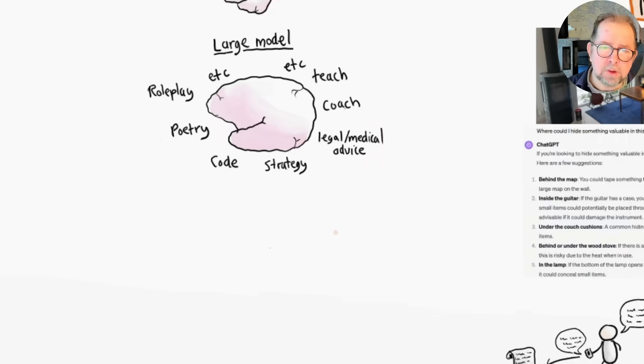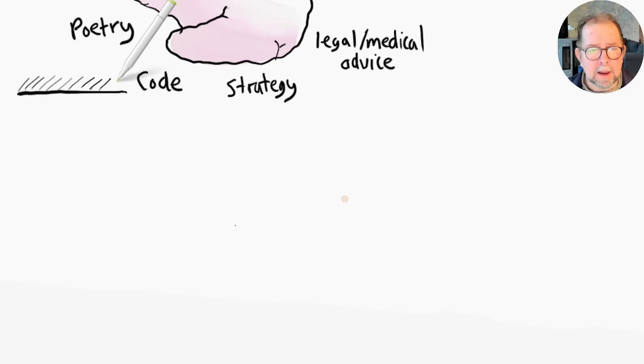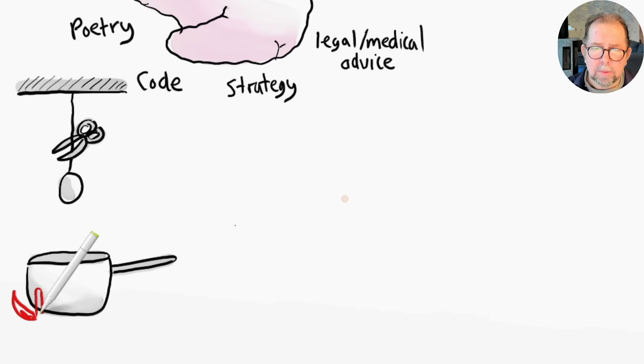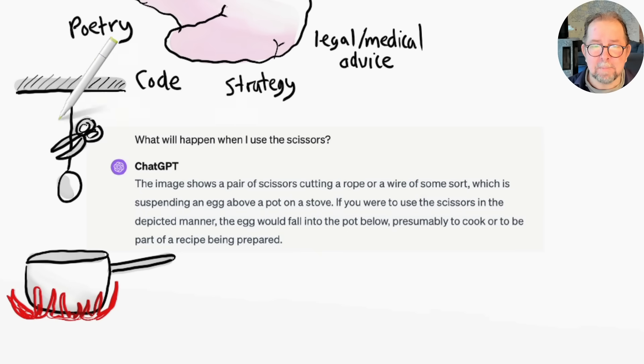Let's take a simple example. I'll give GPT-4 this little drawing that involves a string, a pair of scissors, an egg, a pot, and a fire. What will happen if I use the scissors? The model has most likely not been trained on this exact scenario, yet it gave a pretty good answer, which demonstrates a basic understanding of the nature of scissors, eggs, gravity, and heat.